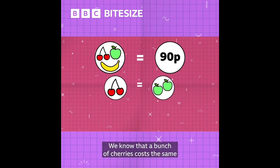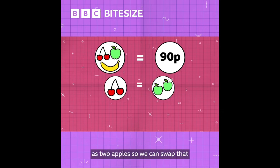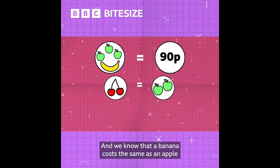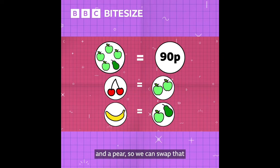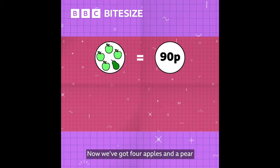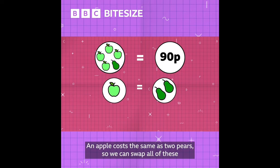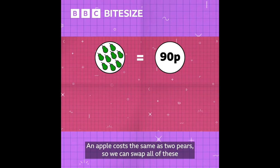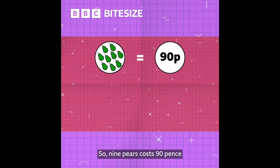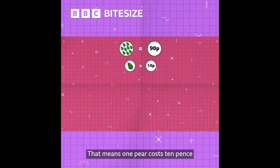We know that a bunch of cherries costs the same as two apples, so we can swap that. And we know that a banana costs the same as an apple and a pear, so we can swap that. Now we've got four apples and a pear. An apple costs the same as two pears, so we can swap all of these. So nine pears cost 90 pence, which means one pear costs 10 pence.